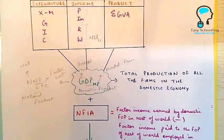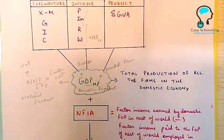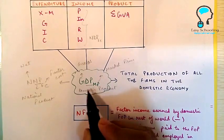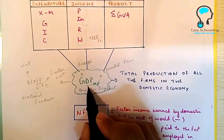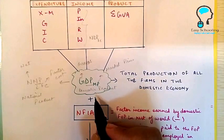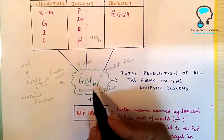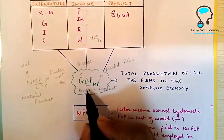If you understand this, half of your problem is already solved. Just three steps you have to follow. We are going to change this DP, that is domestic product, to national product. How are we going to change that?